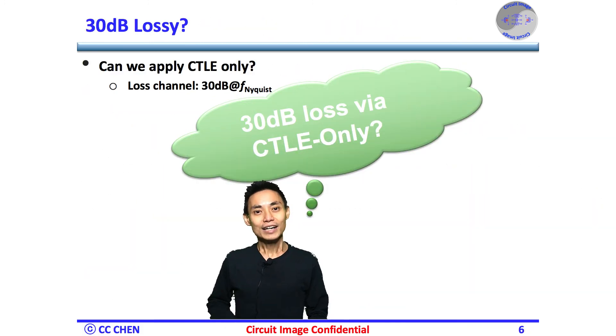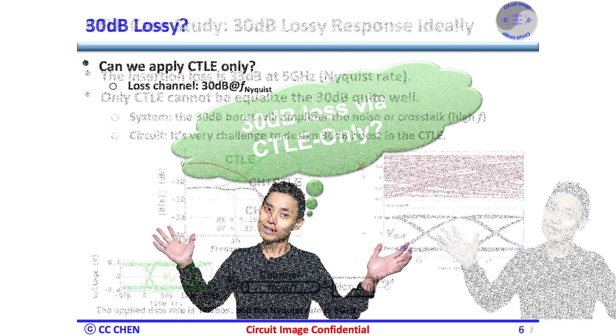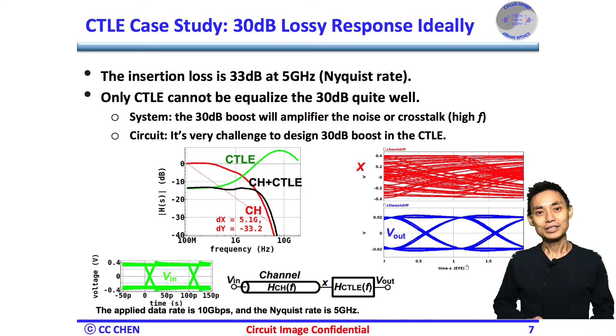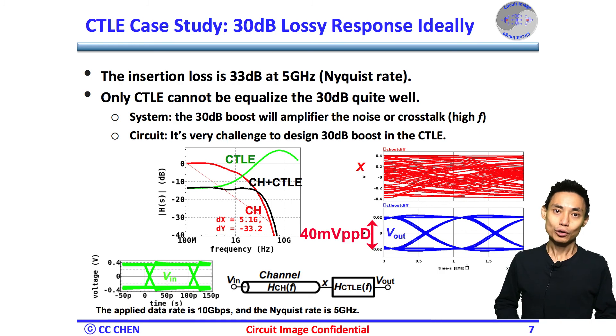Again, any circuit image if we can apply the CTLE only for the 30 dB loss channel? For the case study of the 30 dB loss channel, this simplified simulation shows the equalization feasibility. As you can see, the VRI is wide open, but the swing could be only 14 mV P2P differential or even less and closed.